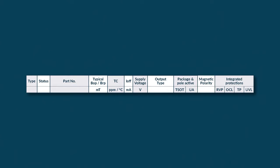As we are focusing on the automotive industry, we include integrated protections in our sensor to improve the robustness in the application. RVP stands for reverse supply voltage protection. The sensor can handle a negative voltage and will not be damaged. The OCL means the output current limit. The output will temporarily shut off if there is an abnormal current going through the output pin.